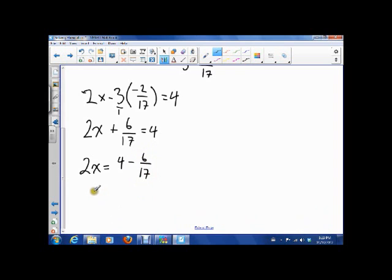So that means 2x is equal to 4 minus 6 seventeenths. Now we need a common denominator. So I need to turn this 4 into something over 17. And that's going to be 68. 4 times 17 is 68. So that means that 2x is 68 minus 6, 62 over 17.